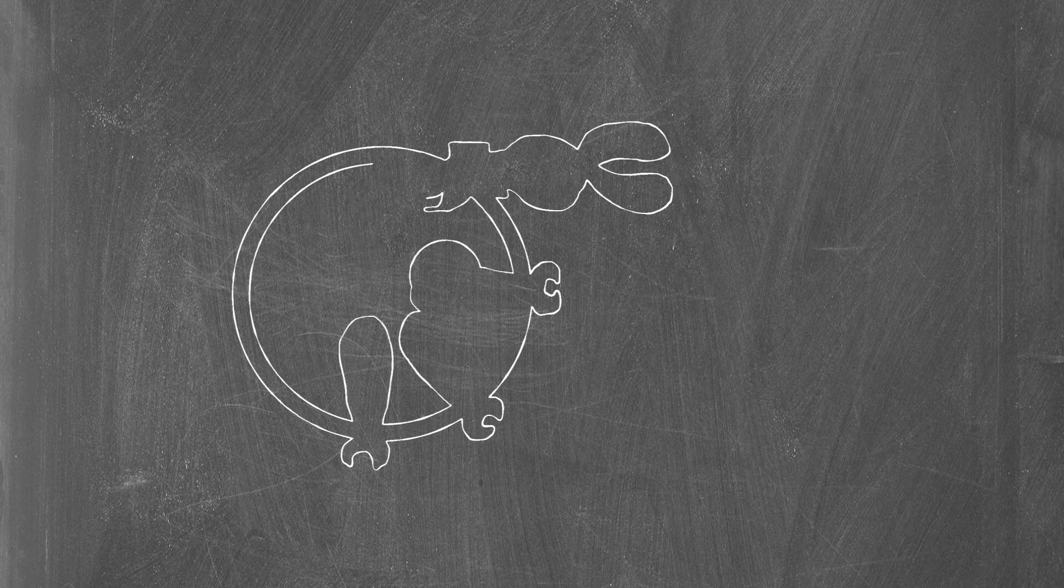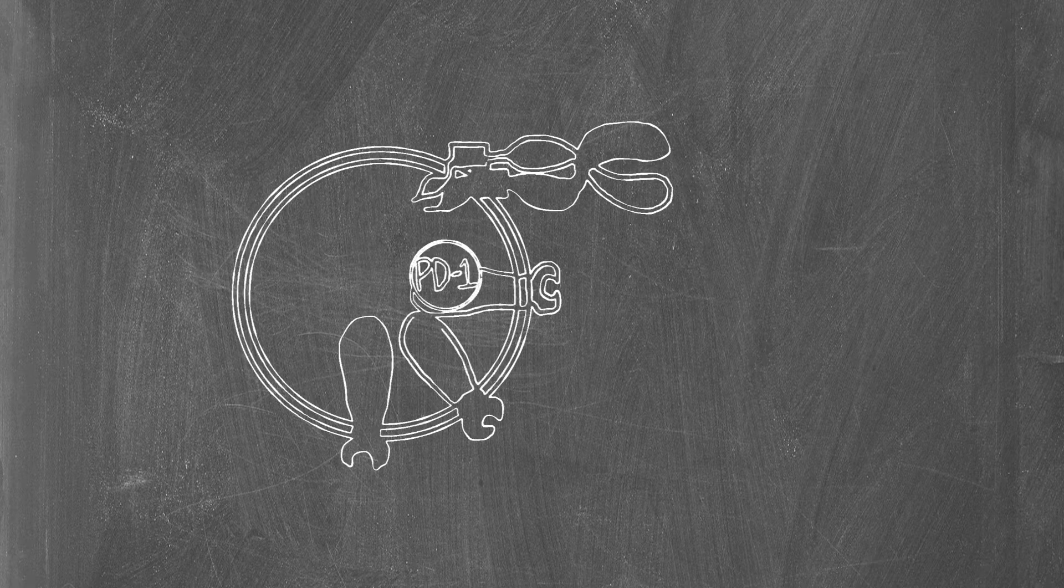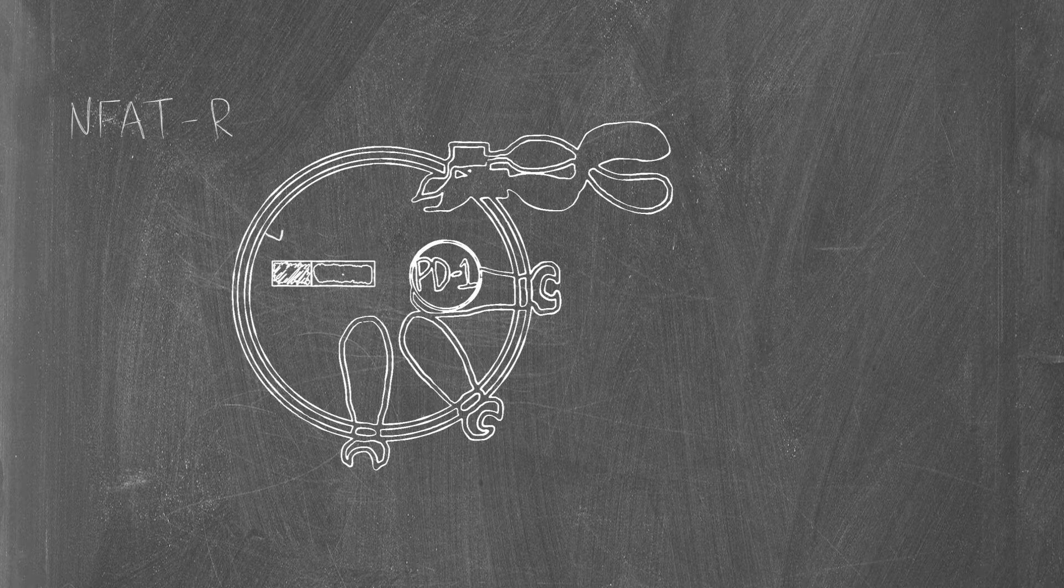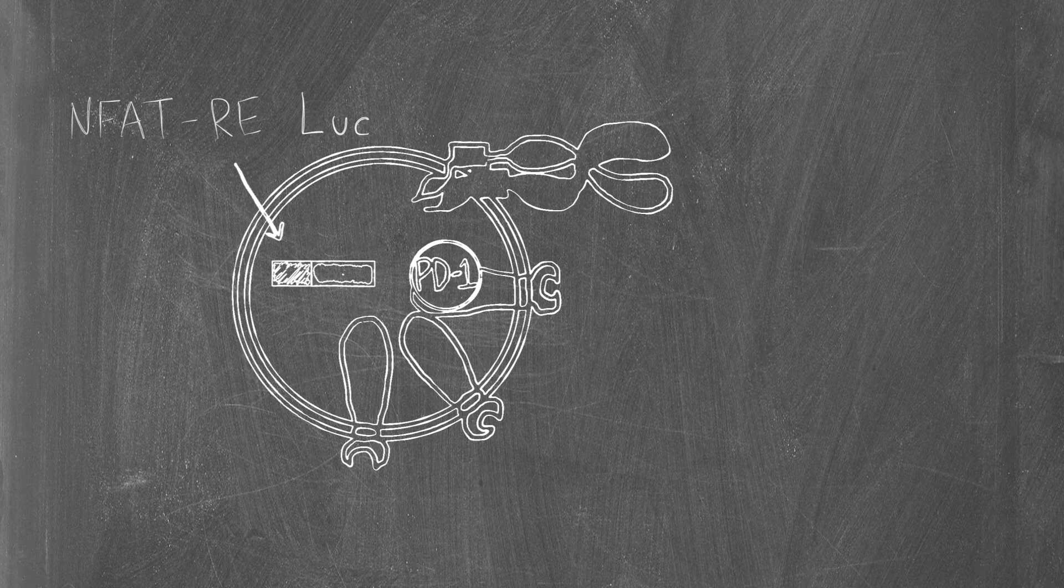The assay works like this. We start with an effector cell engineered to express the PD-1 receptor on the cell surface and a luciferase reporter under the control of an NFAT response element. We call this the PD-1 effector cell line.